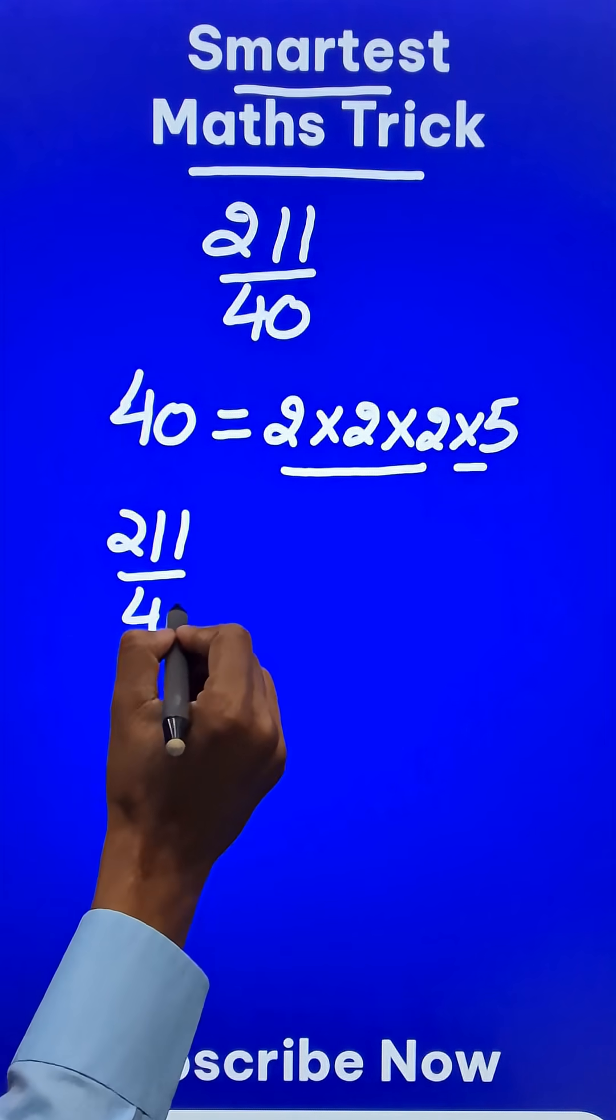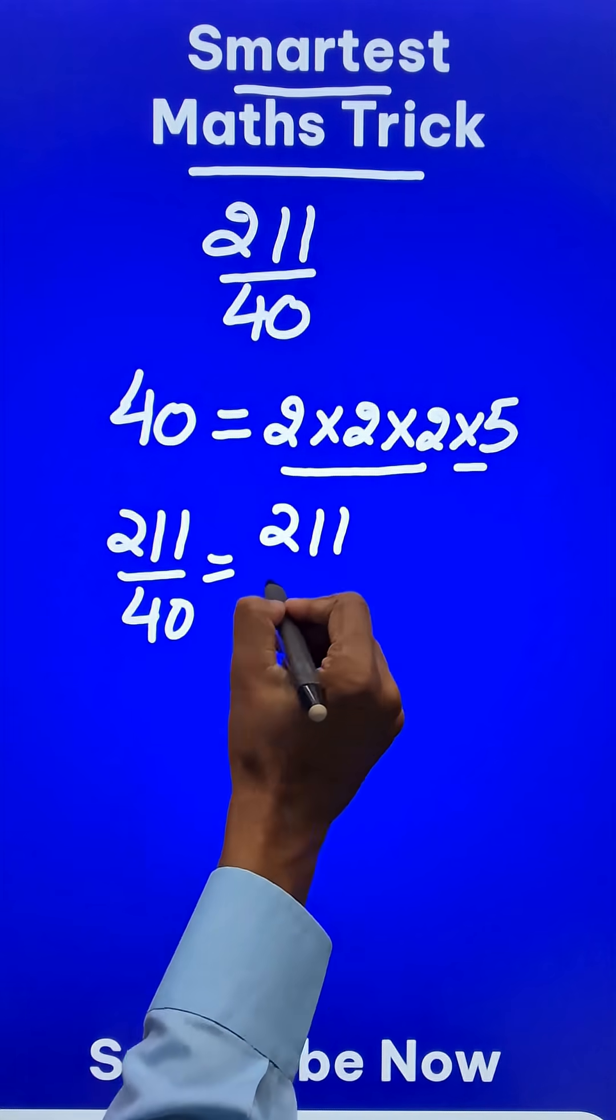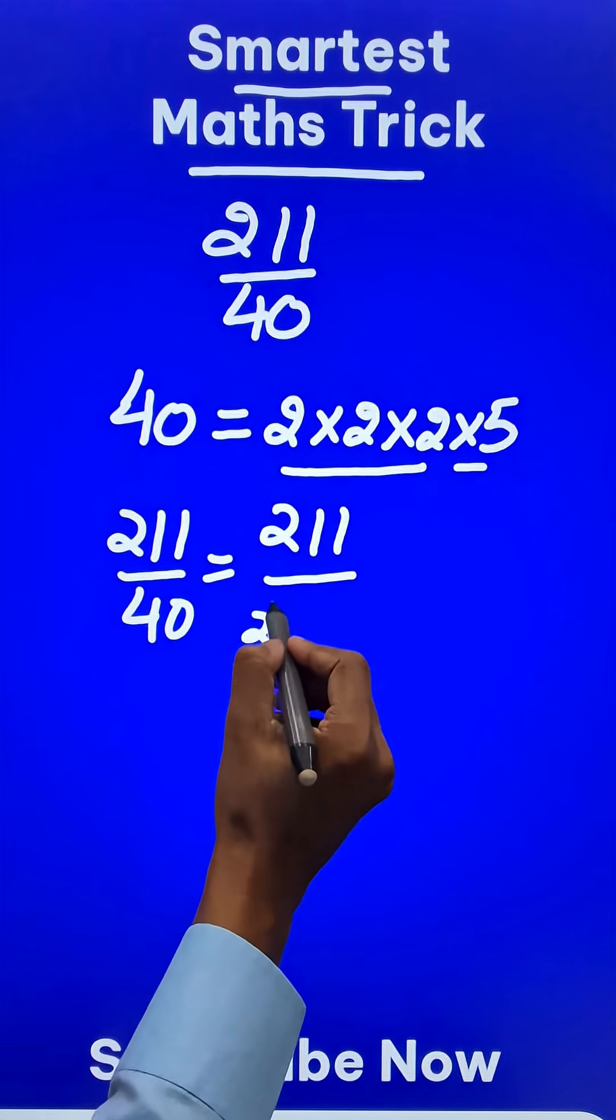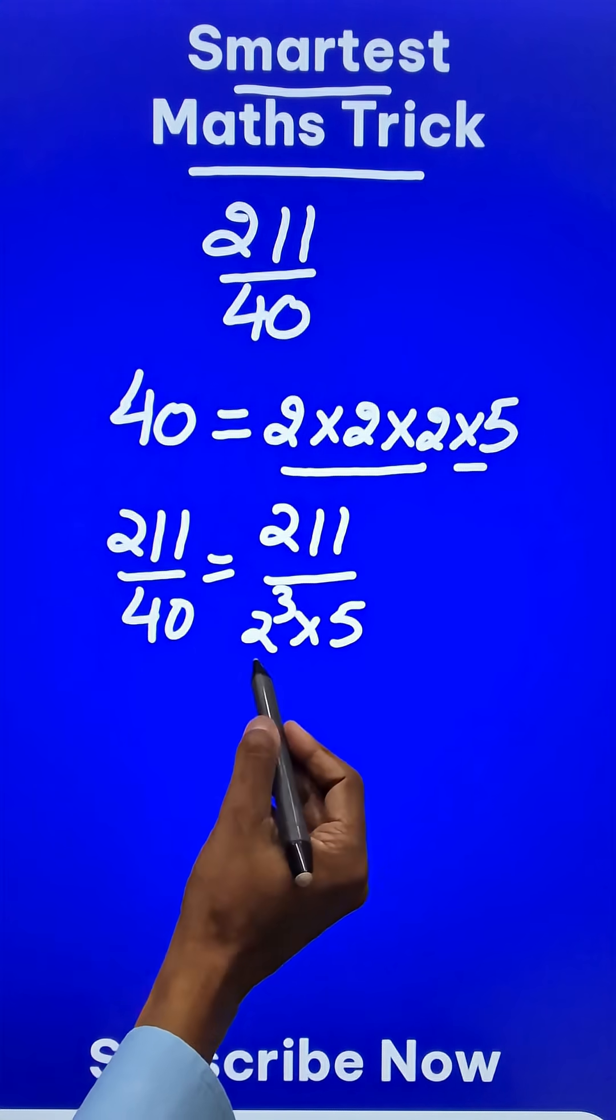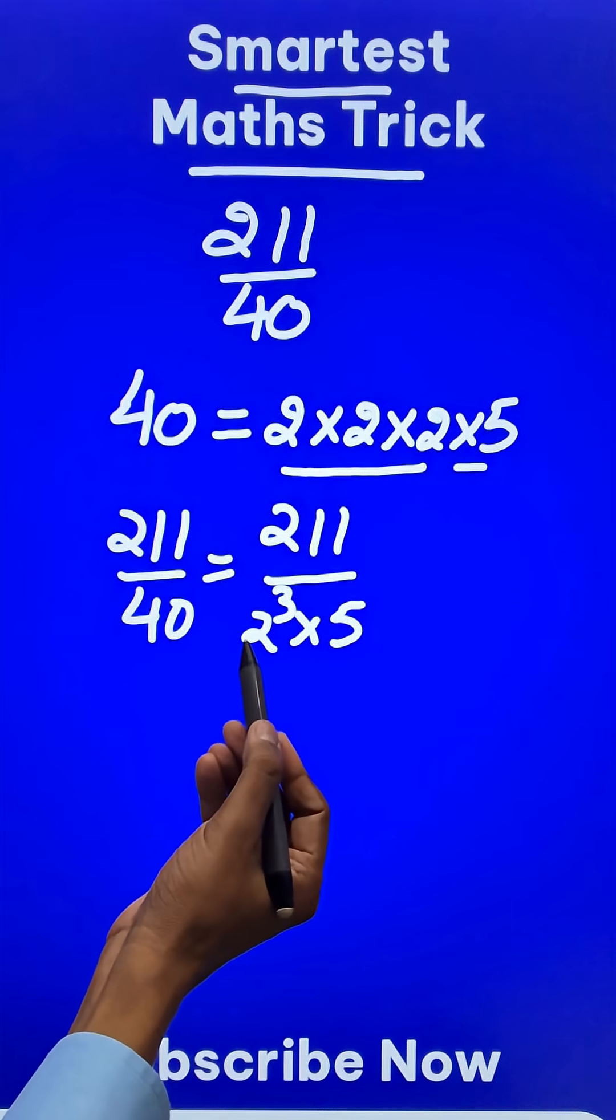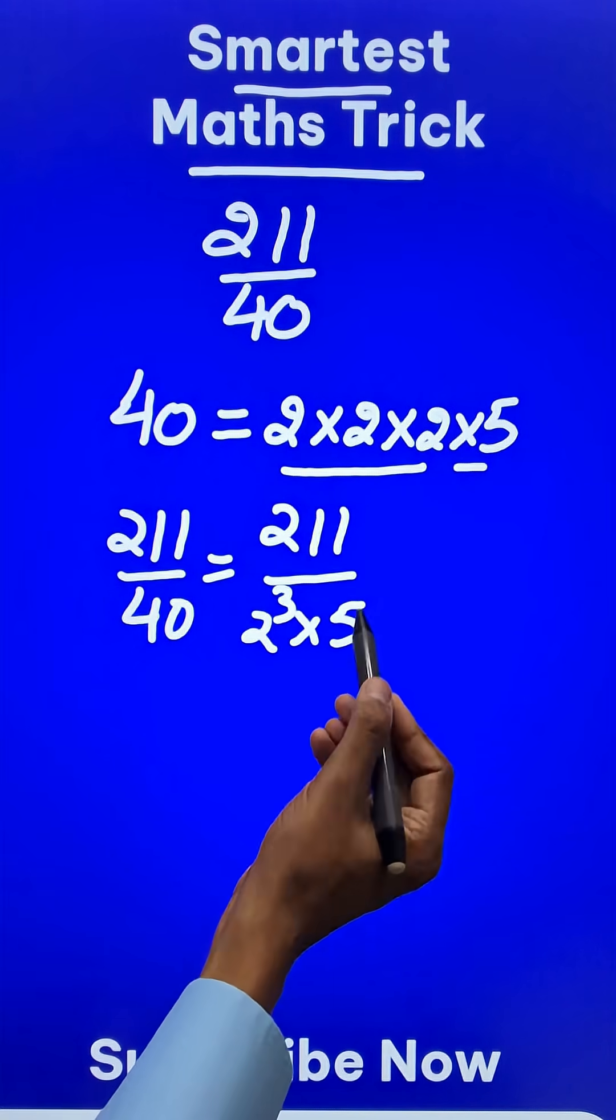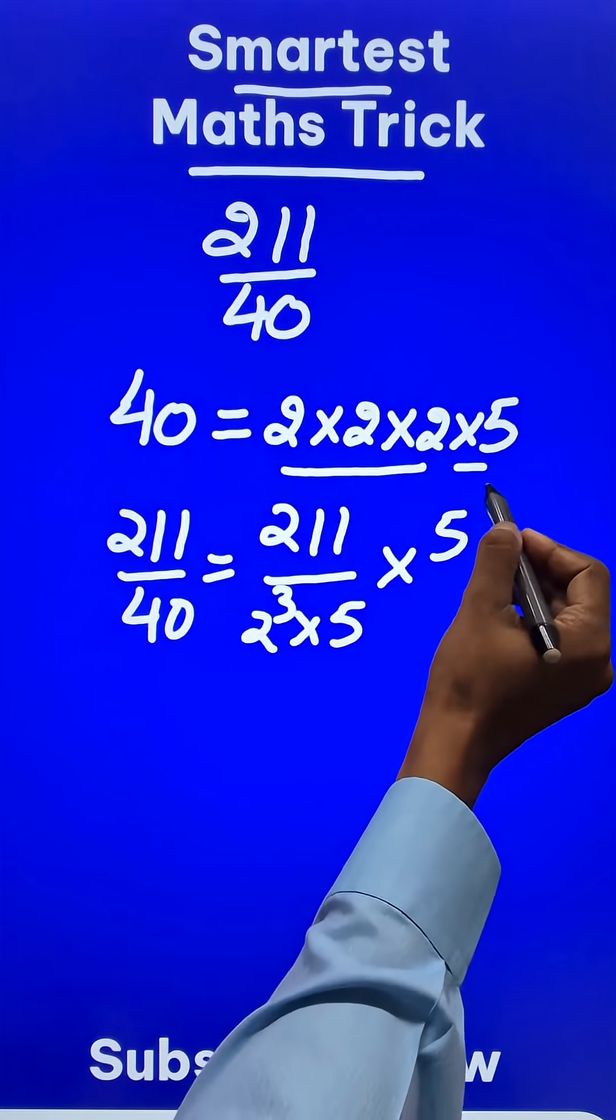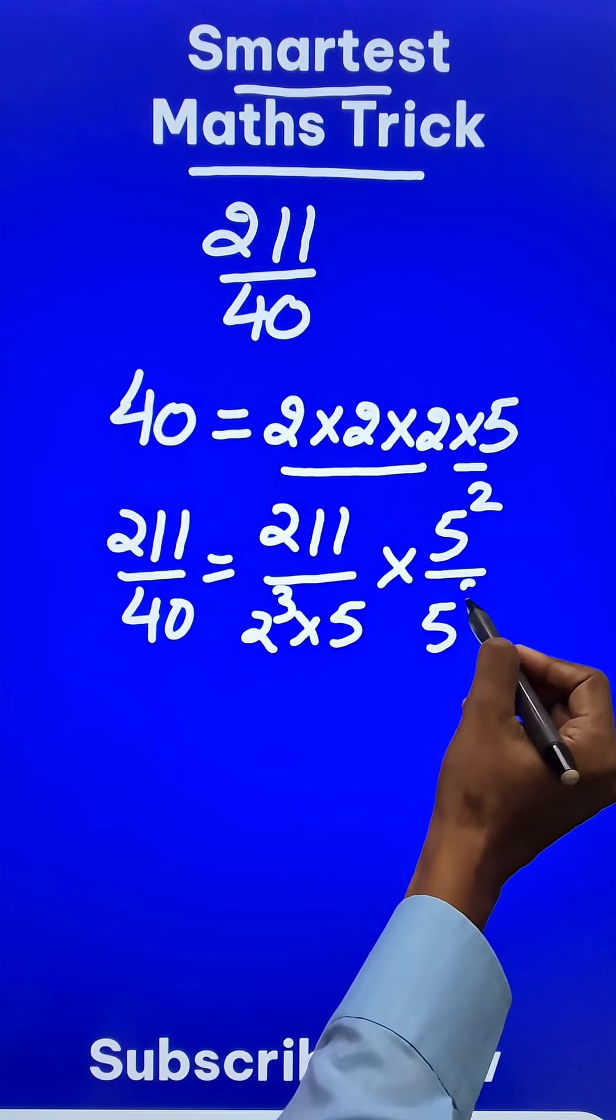So 211 upon 40 is written as 211 upon 2 raised to power 3 times 5. We need to equalize the number of 2s and 5s in the denominator. There are three 2s and only one 5, so I will multiply the numerator and denominator by 5 square.